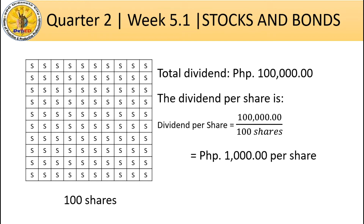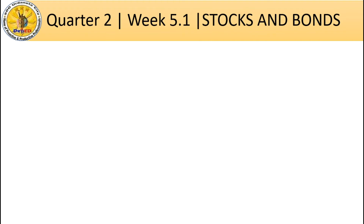So if you bought 10 shares in the company, then you will receive 10 times 1,000, which equals 10,000 pesos. The more shares you buy, the higher your earnings.